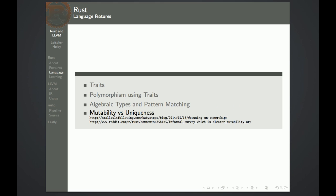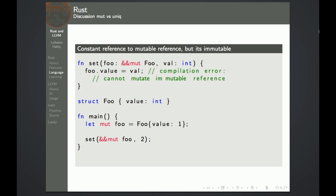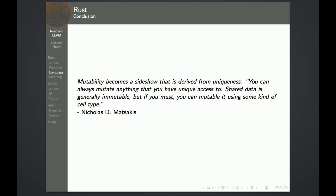Another discussion in Rust these days is mutability versus uniqueness. One example shows an immutable reference where the variable is actually mutated inside the set function, which is an inconsistency. Another slide shows a mutable reference — we have a constant reference to a mutable reference, and therefore we can't mutate it, but this doesn't make sense as it's a mutable reference. So in the future, we might see 'unique' instead of 'mutable' as a keyword.